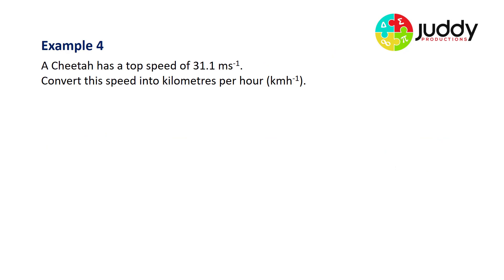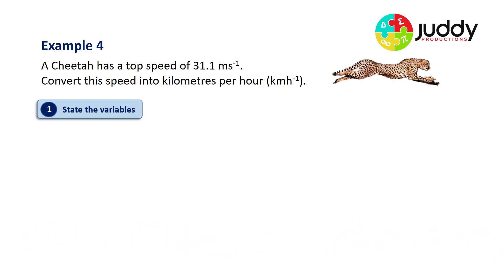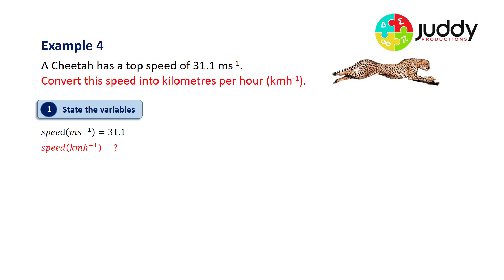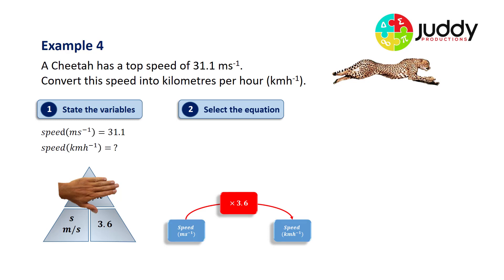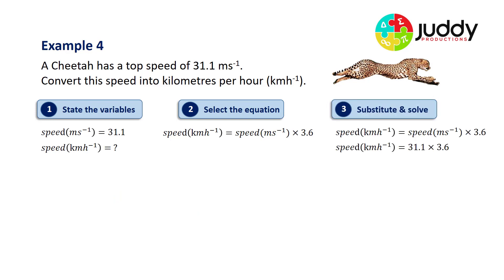Final example: a cheetah has a top speed of 31.1 metres per second. We want to convert this into kilometres per hour. State the variables: speed in m/s is 31.1. Select the equation using the triangle: speed in km/h equals speed in m/s multiplied by 3.6. Substituting and solving: 31.1 multiplied by 3.6 gives a speed in kilometres per hour of 111.96.